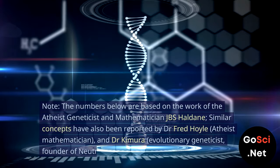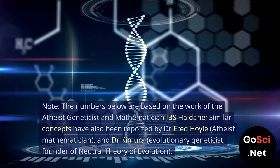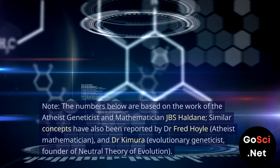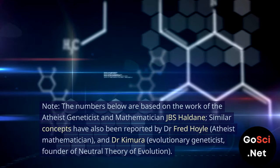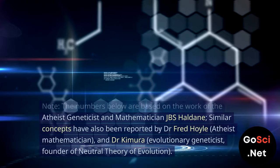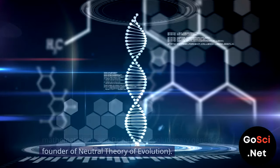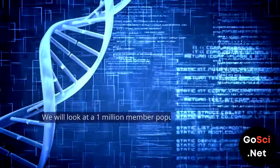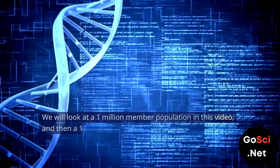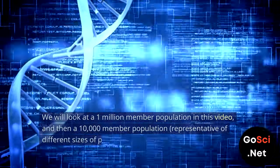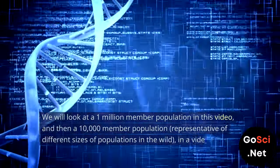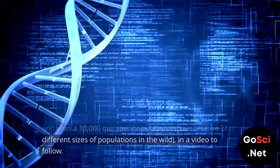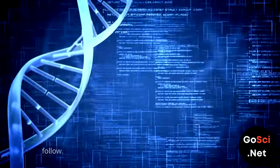Similar concepts have also been reported by Dr. Fred Hoyle, atheist mathematician, and Dr. Kimura, evolutionary geneticist and founder of the neutral theory of evolution. We will look at a 1 million member population in this video, and then a 10,000 member population, representative of different sizes of populations in the wild, in a video to follow.